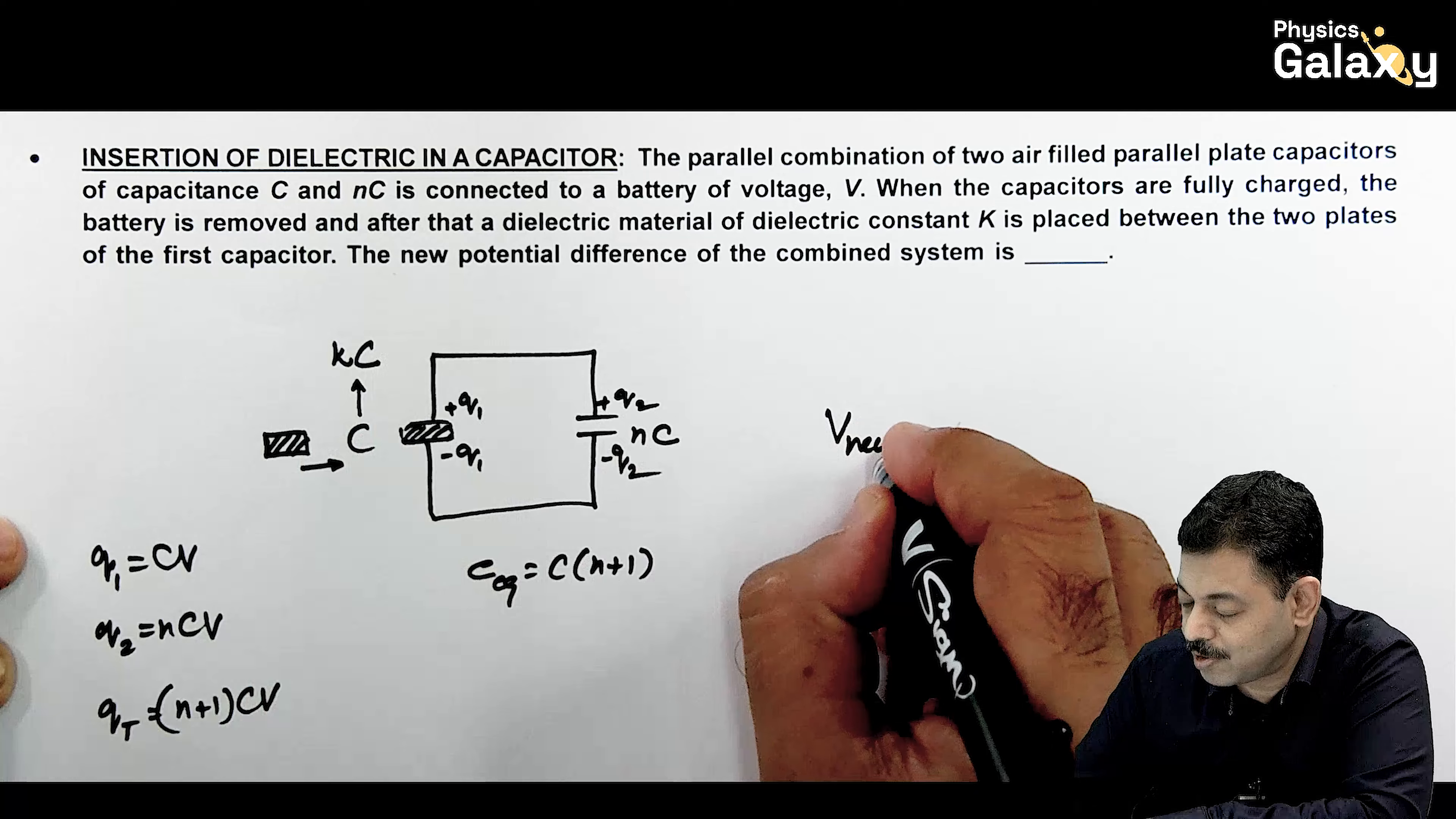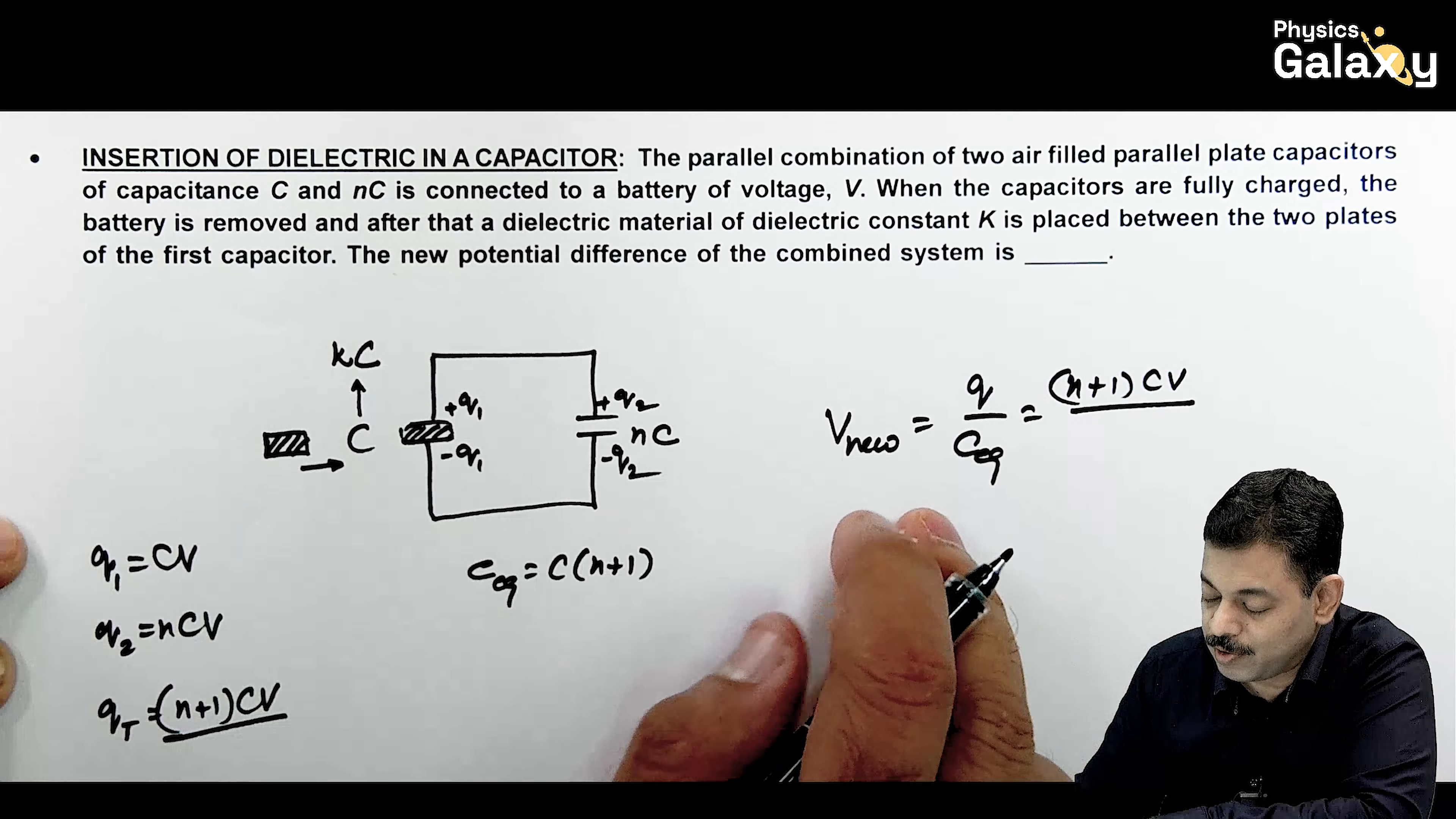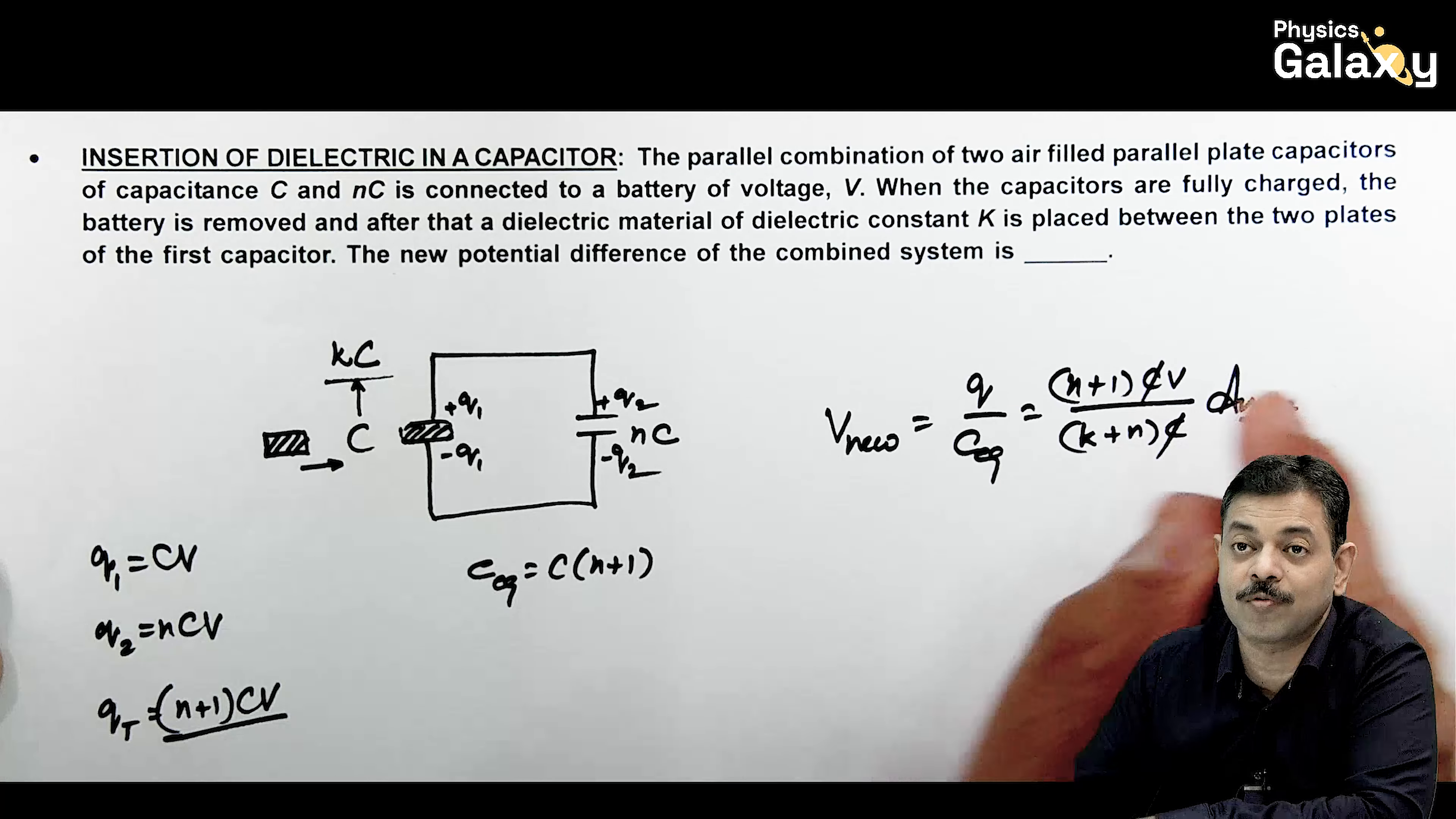So we can write directly V_new should be equal to Q divided by C_eq where Q was this. Because the battery is removed, the charge will not change. This is (N+1)CV. But C_eq will be KC plus NC. So this will be (K+N) times C, C gets cancelled out and this is the result what we are getting.